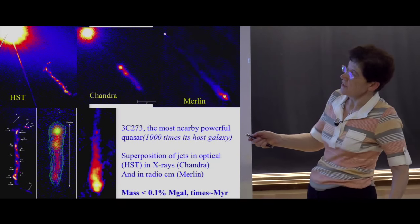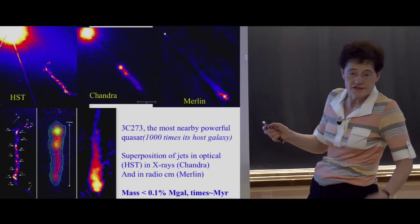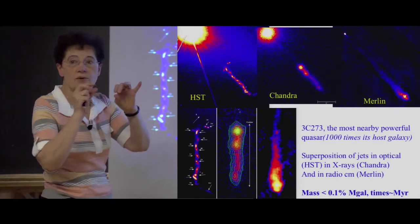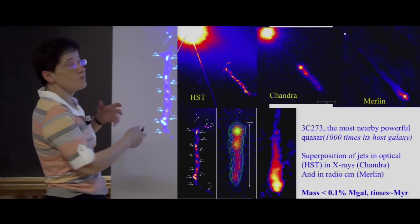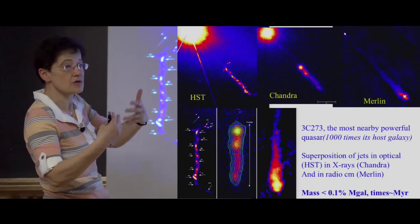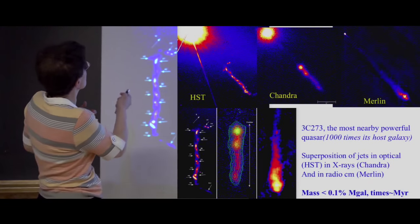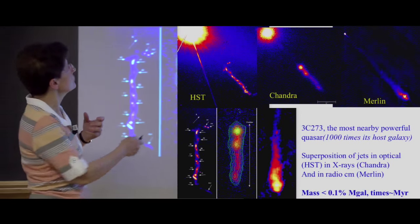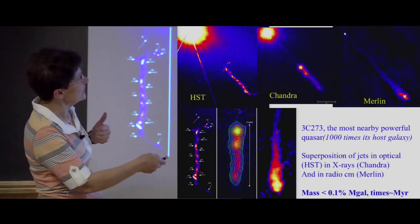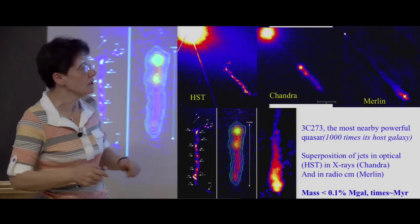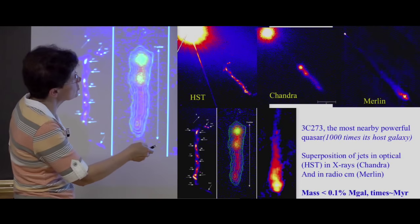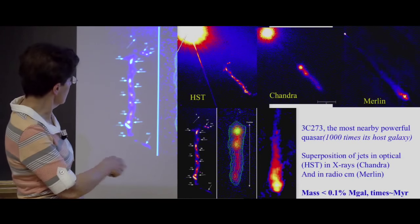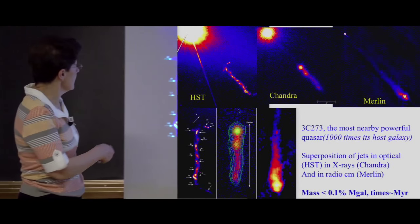The quasar is emitting puffs of plasma — the jet consists of electrons and protons, plasma going very fast. At Chandra in X-ray you can see emission in X-ray, and in radio using an interferometer with a large baseline you can see shocks when the jet arrives in the intergalactic medium. You can compare all these multi-wavelength jets.